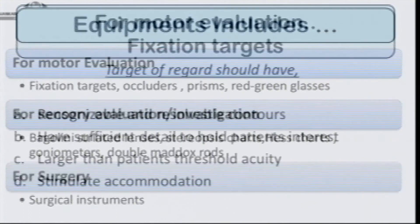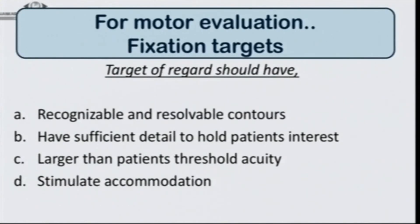Let's look at the first thing: the fixation targets. For any squint evaluation, the first and foremost thing we need is a fixation target. The target should be recognizable and resolvable, it should hold the patient's interest depending on age, it should be larger than the threshold visual acuity. If visual acuity is 6/6, we use a fixation target of 6/12 on a Snellen chart, and it should stimulate accommodation — meaning a torch would not be a sufficient fixation target and should not be used.